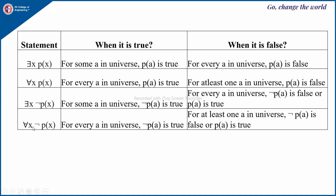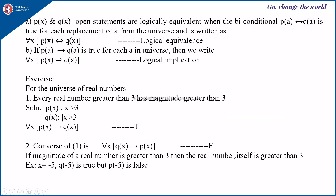∃x ¬P(x) and ∀x ¬P(x) are just the opposite, with negation of P(a) in each case. If P(x) and Q(x) are open statements which are logically equivalent, then the biconditional P(a) ↔ Q(a) is true for each replacement of a from the universe, written as ∀x P(x) ≡ Q(x). If P(a) → Q(a) is true for each a in the universe, then we write ∀x P(x) → Q(x), meaning there is no situation where P(a) is true and Q(a) is false.